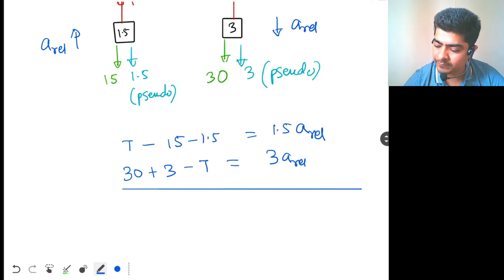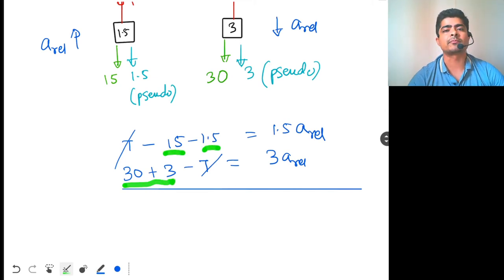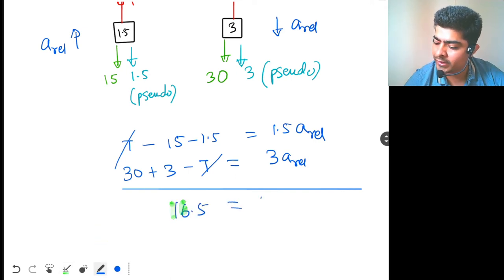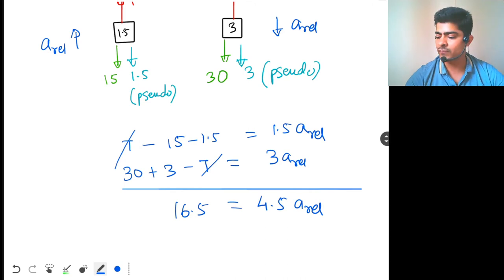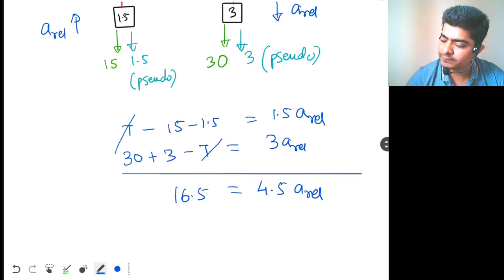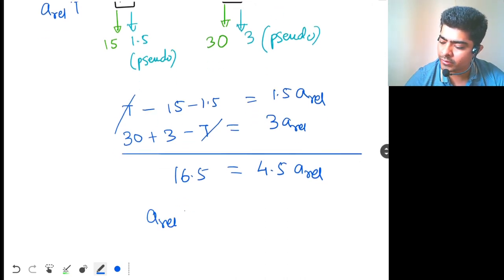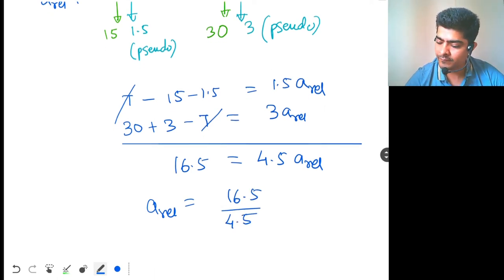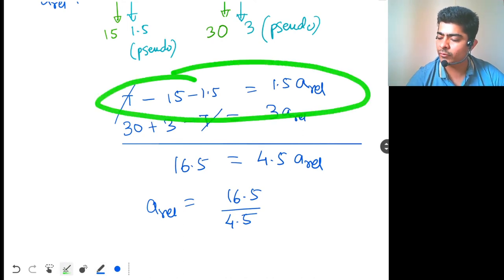What will we get? So, when you add them, t and minus t cancels out. So, 30 plus 3 minus 15 minus 1.5. This will be equal to 16.5 and over here we get 4.5 a relative. So, a relative will be what? 16.5 divided by 4.5. Now, again put back in the same equation.